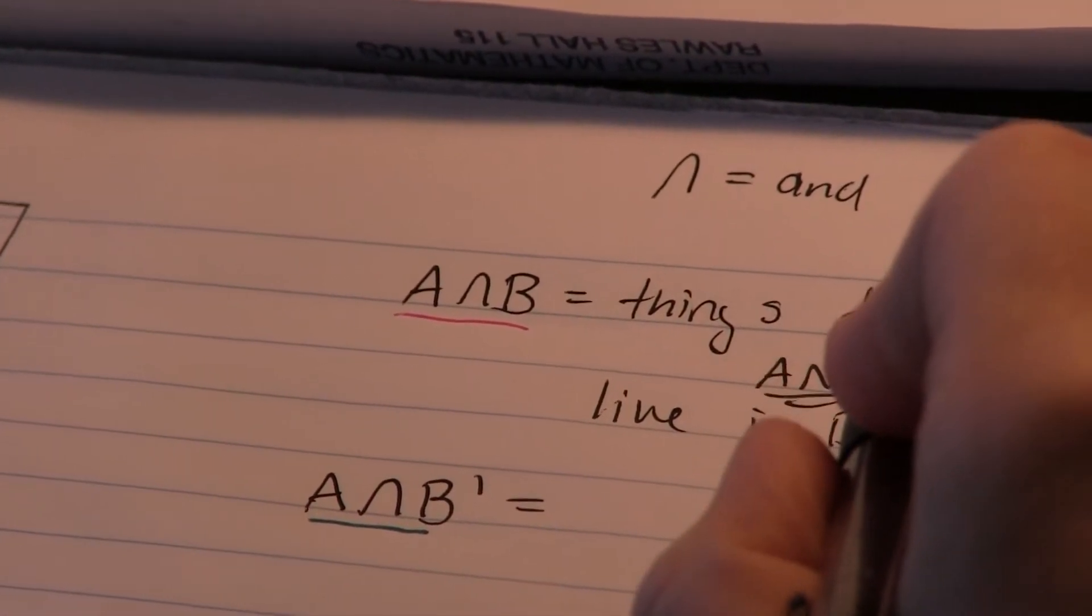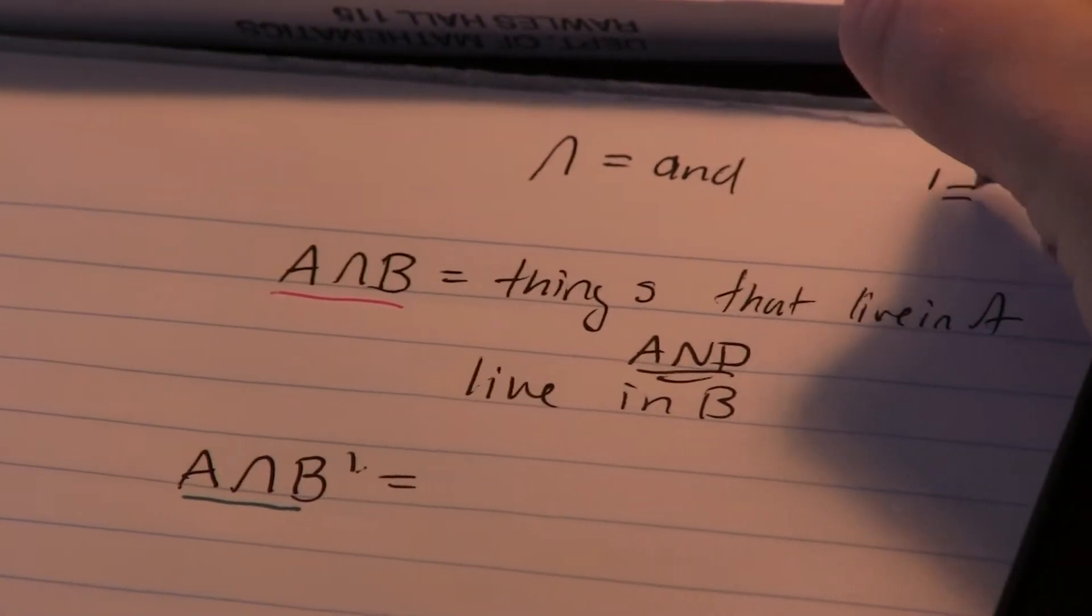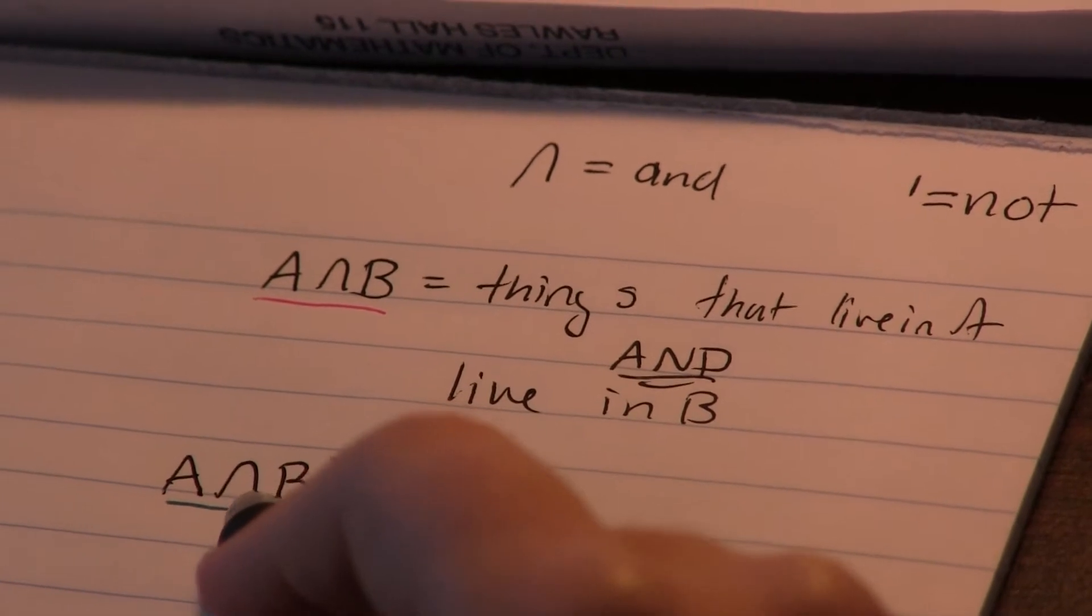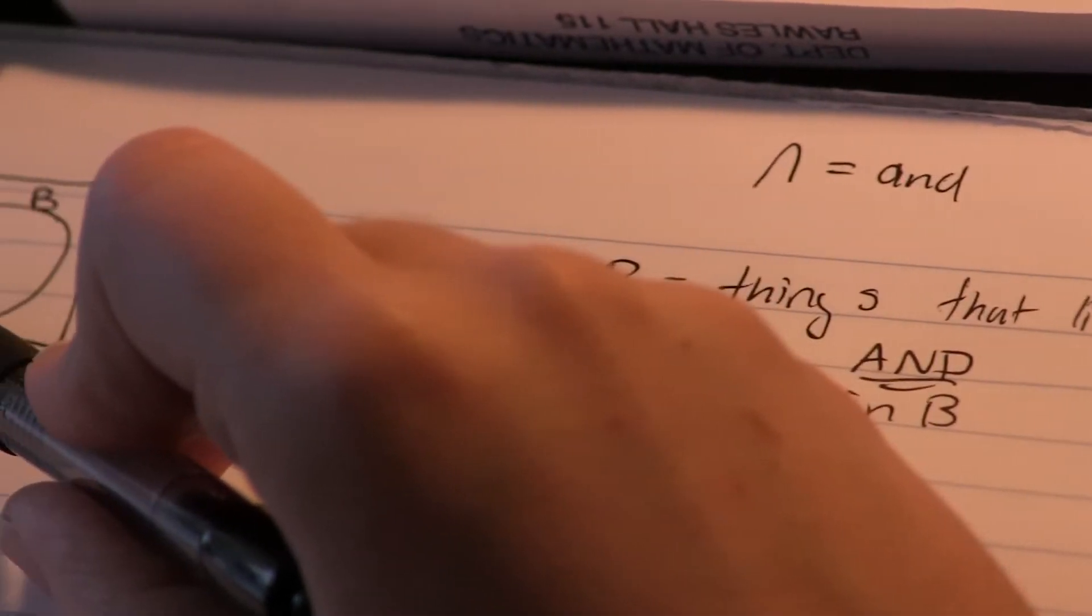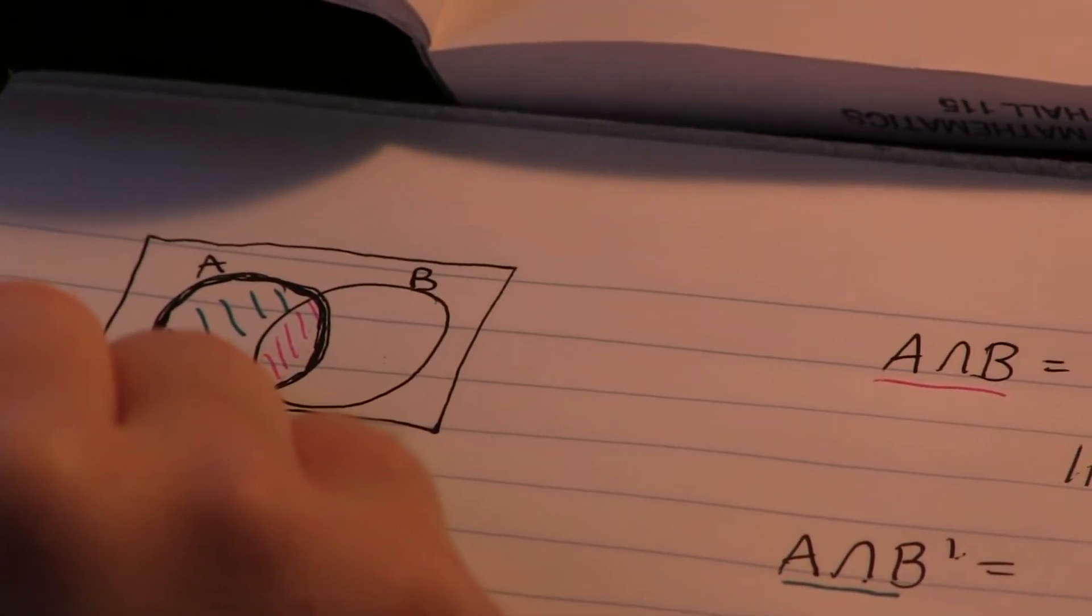So this is almost exactly the same as this except I have this complement thing. And from class I know that complement means not. So things that live in A and don't live in B. That makes sense with this picture because out of the stuff that's in A, this is the part of the stuff that's in A that's not in B.